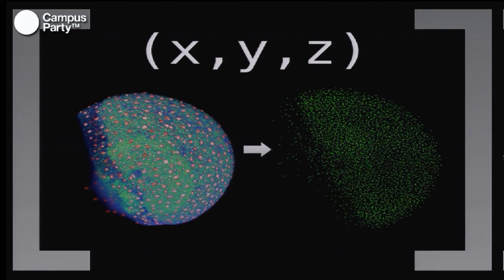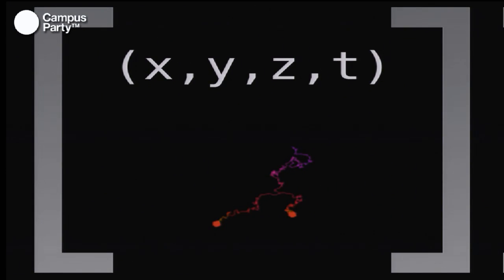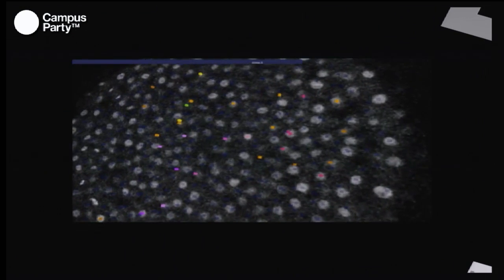We can go a step further because we have 3D data — so let's find the XYZ address of each cell. We can go further still because we have time: we find a cell at one moment and track where it's going. We make the acquisition, produce the film, and then track the development of each of the cells.